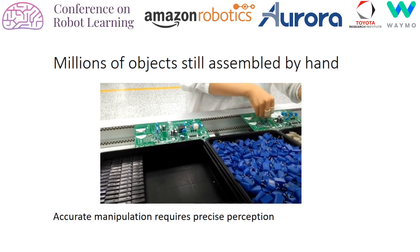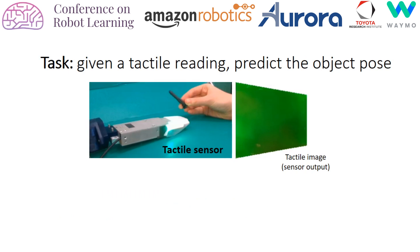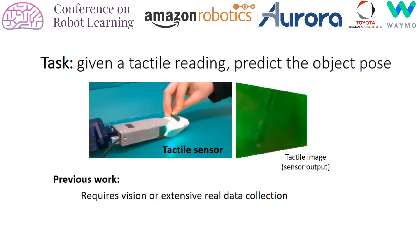In this work, we aim at improving perception by looking at the problem of tactile pose localization, where when an object touches a tactile sensor, we need to predict from its output the pose of the object. Previous work on this problem has either used tactile as a complement to a vision system, or required a lot of data collection, which is often expensive and unpractical.